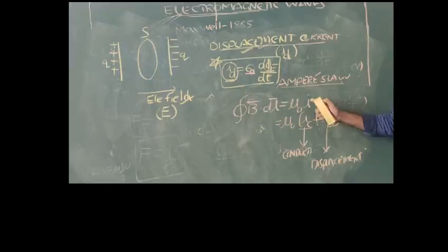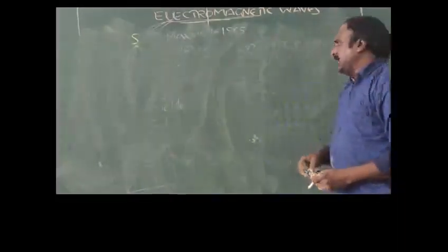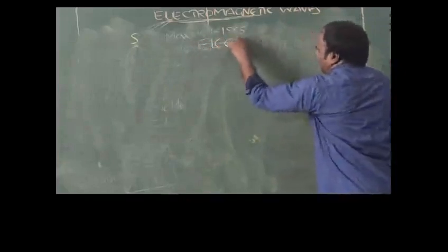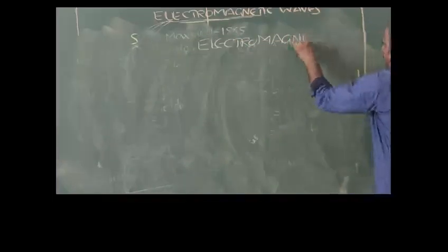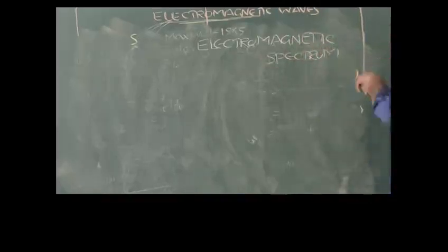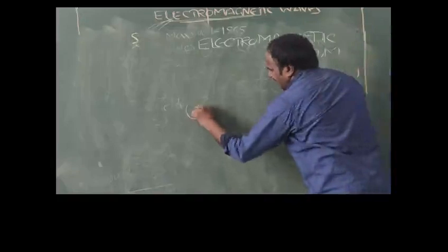To solve problems in electromagnetism, we use a mnemonic system related to the electromagnetic spectrum. The electromagnetic spectrum contains waves we remember as: G, X, U, V, I, M, R — standing for Gamma, X-rays, Ultraviolet, Visible, Infrared, Microwave, and Radio waves.